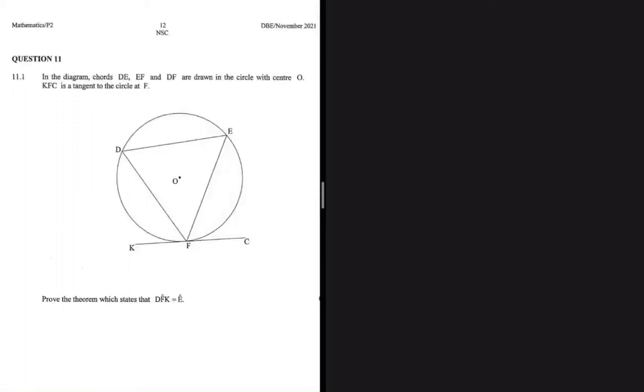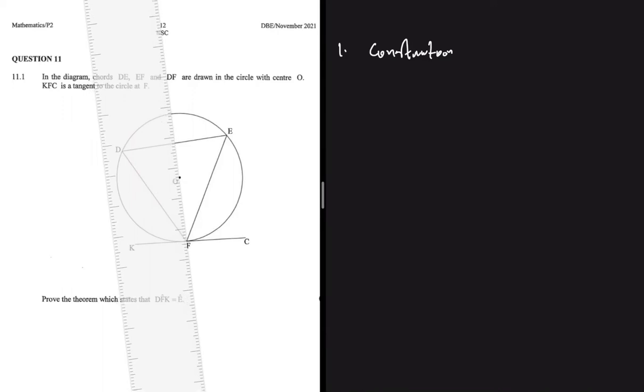In the next four minutes we're going to prove the tangent-chord theorem in four easy steps. The first step is to make a construction. We're going to construct a diameter that passes through point O. If I do that, we're gonna have something like what I just drew on the left hand side.